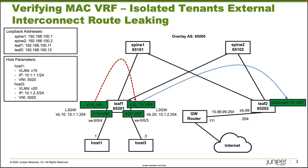Host 1 connects into a v10 VRF which is a MAC VRF, and the IRB interface — the layer 3 interface for host 1 — is the default gateway at 10.1.1.254. That IRB is in the v10_vr routing instance, which is a virtual router instance type.